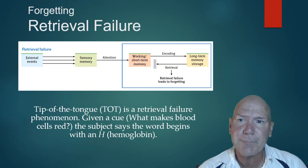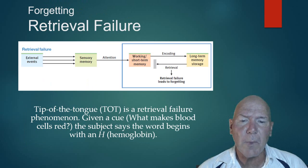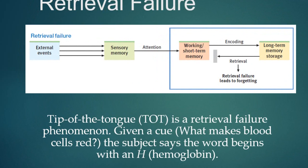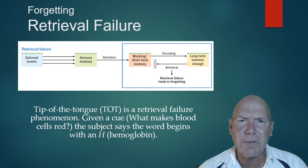Another reason we forget is retrieval failure. We may have stored and encoded information, but we can't get it back out. This is called the tip-of-the-tongue phenomenon — you know what something is, but you can't quite recall it. You might think, 'Oh, it starts with a T.' That means you've stored it but you're having difficulty retrieving it.